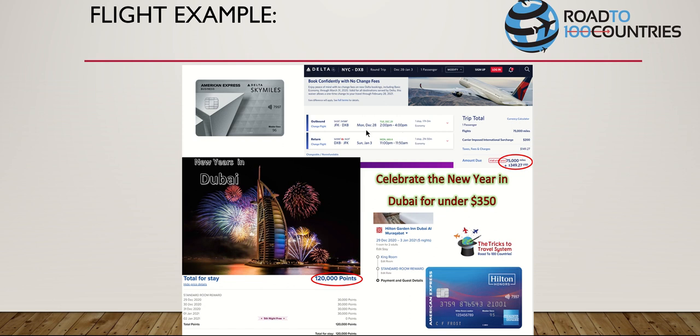Flying December 28th to January 3rd, your hotel would be December 29th to January 3rd - five nights. With 120,000 Hilton points and the fifth night free, you can stay at the Hilton Garden Inn Dubai, right next to the Dubai Mall and the Burj Khalifa - heart of the city. So with two cards, 130,000 Hilton points and 90,000 Delta miles, you can go to Dubai over New Year's for essentially $350.